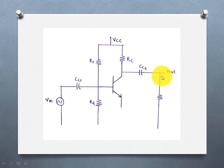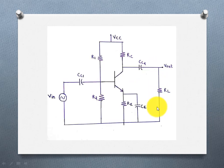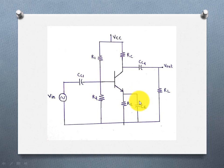The output is taken through a coupling capacitor connected to the load resistor. Next, on the emitter side there is a resistor in parallel with a bypass capacitor, called CE. The voltage drop across the emitter resistor is bypassed by this capacitor.